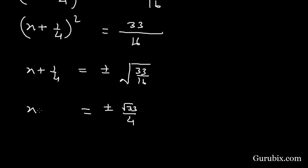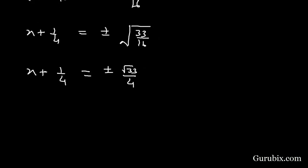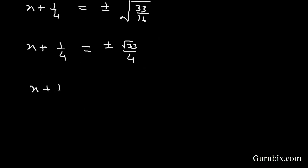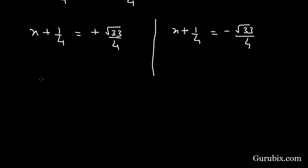Now x + 1/4 = ±√33/4. This gives us x = -1/4 + √33/4 and x = -1/4 - √33/4, which simplifies to x = (-1 + √33)/4 and x = (-1 - √33)/4.